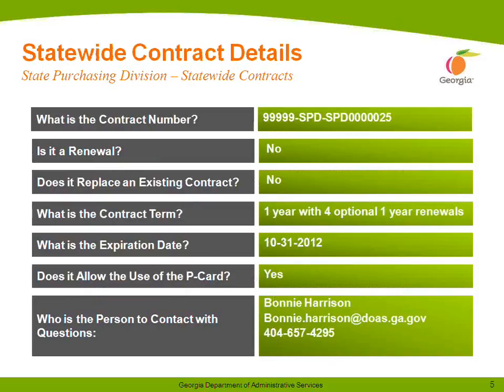On your screen, you'll see the contract number listed there. That's the base contract number. Each supplier will have an individual contract number — you'll see a dash next to that number 25, and then it will be 0001, 0002, and so on, up to number 5. This contract is not a renewal. This is a brand-new statewide contract. It does not replace an existing contract. The contract term is one year — one calendar year — with four optional one-year renewals. The expiration date of the initial term is October 31, 2012, so we're in the initial term of this contract. It does allow the use of your P-card.